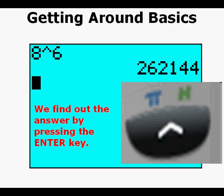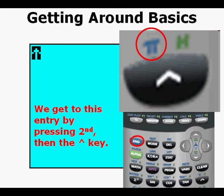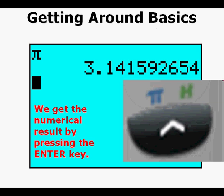We get to the pi entry by pressing second, then the rooftop or exponent key on the right side of the keypad. And here is that key highlighted at the right of the keypad at the lower right. We get the numerical decimal approximation of pi by pressing the enter key. And this is the irrational number pi discovered by the ancient Greeks.